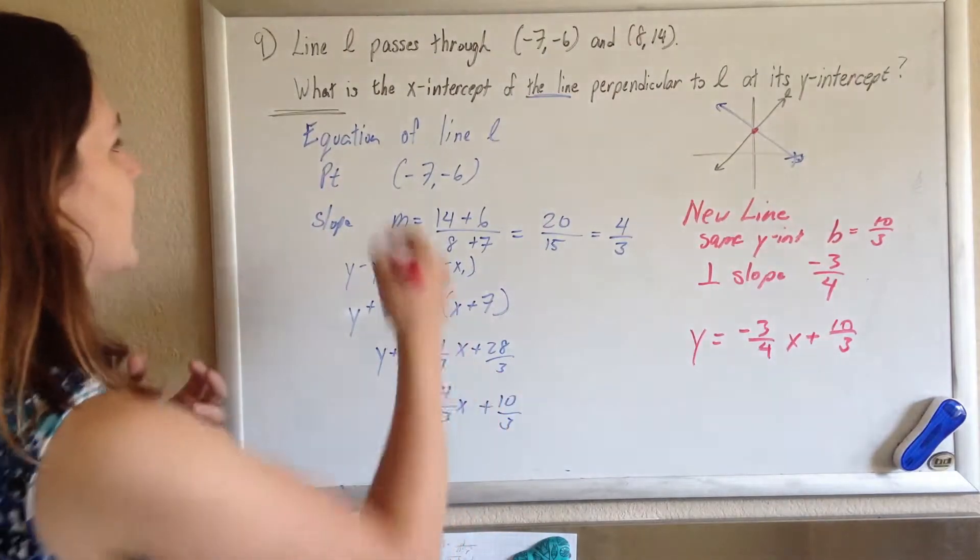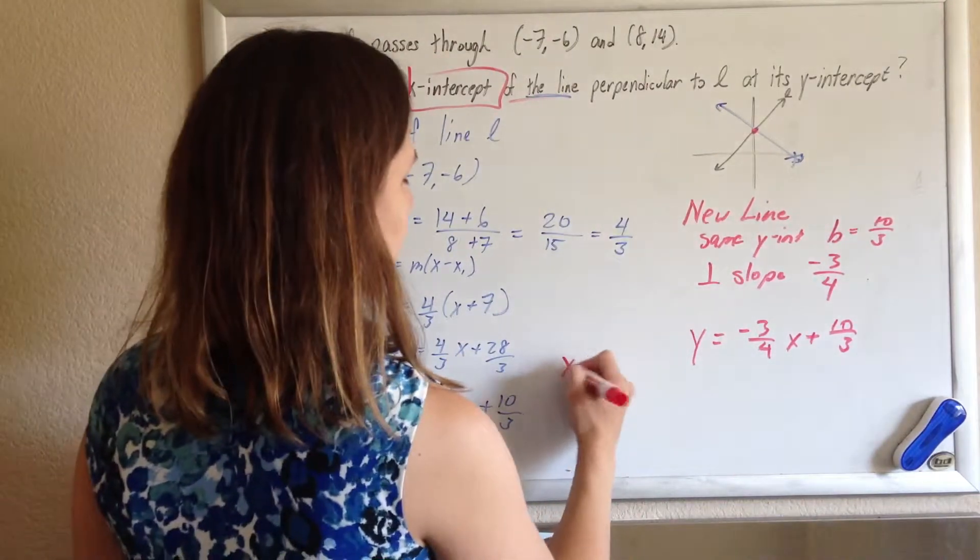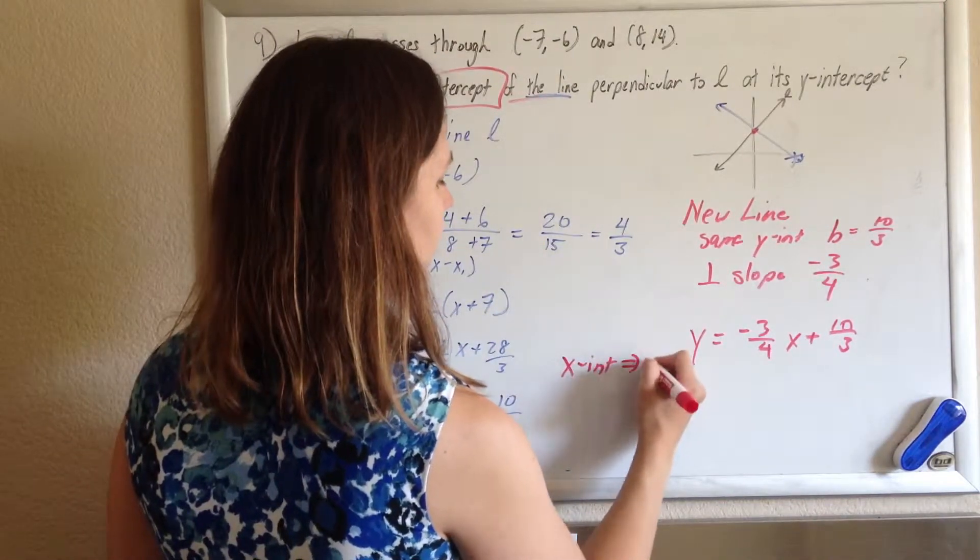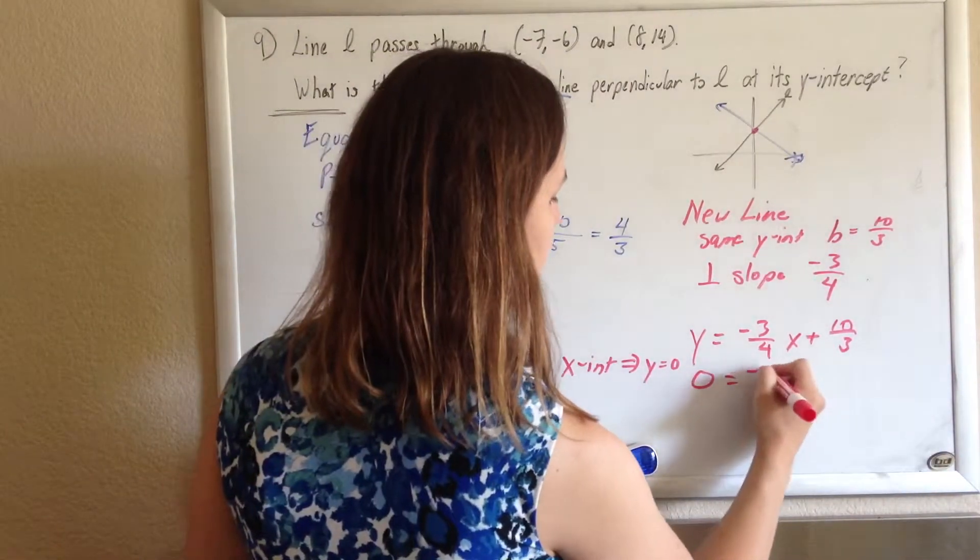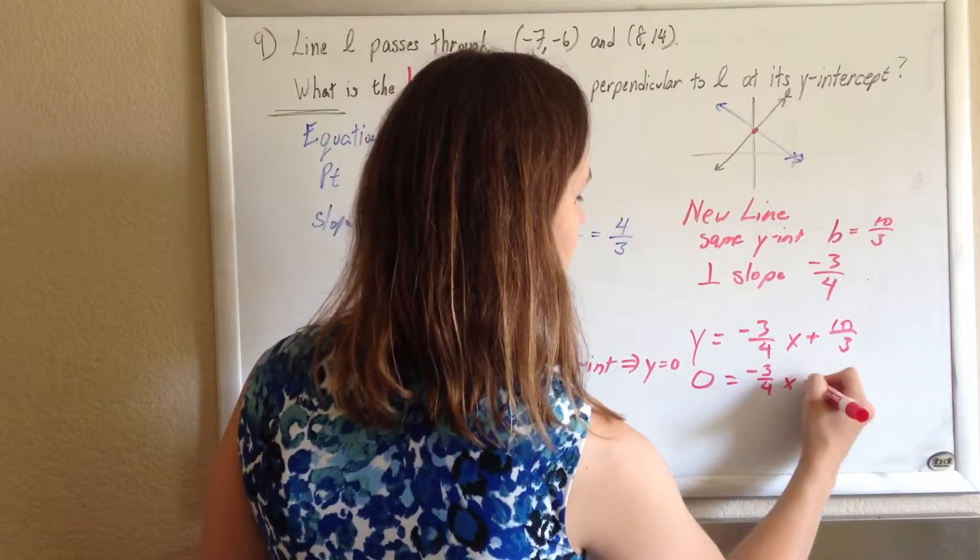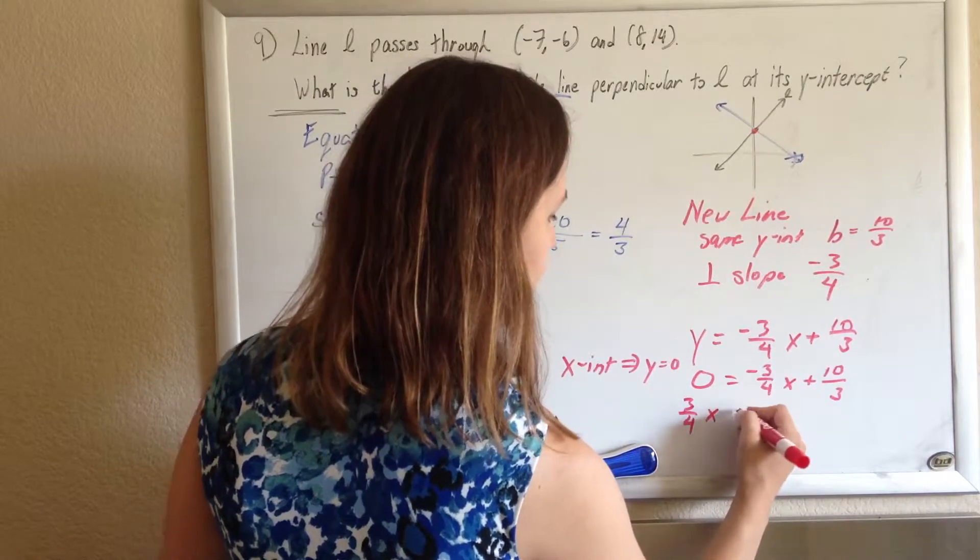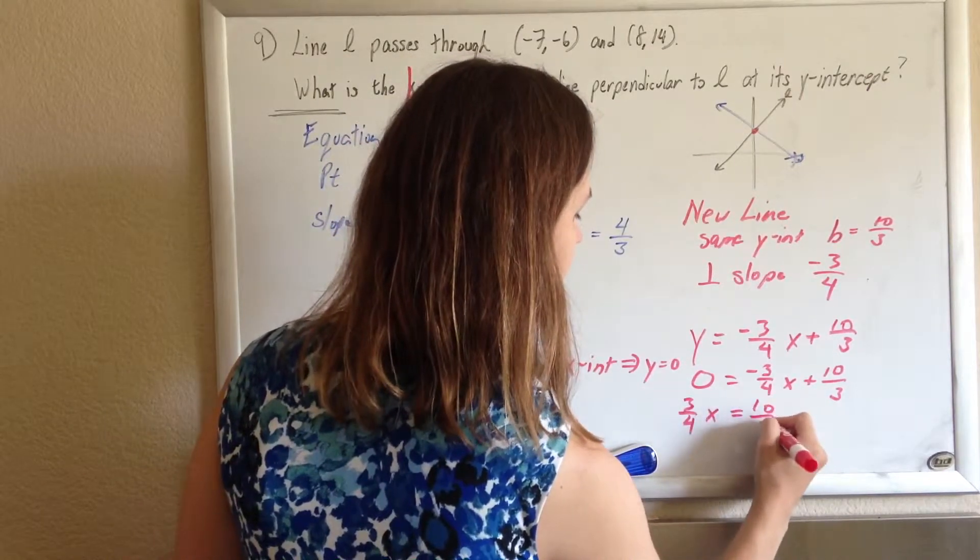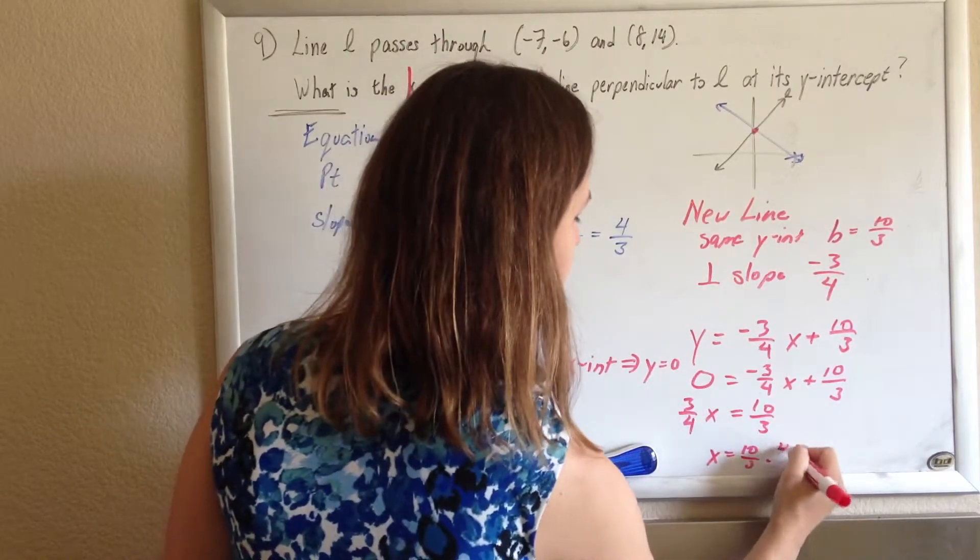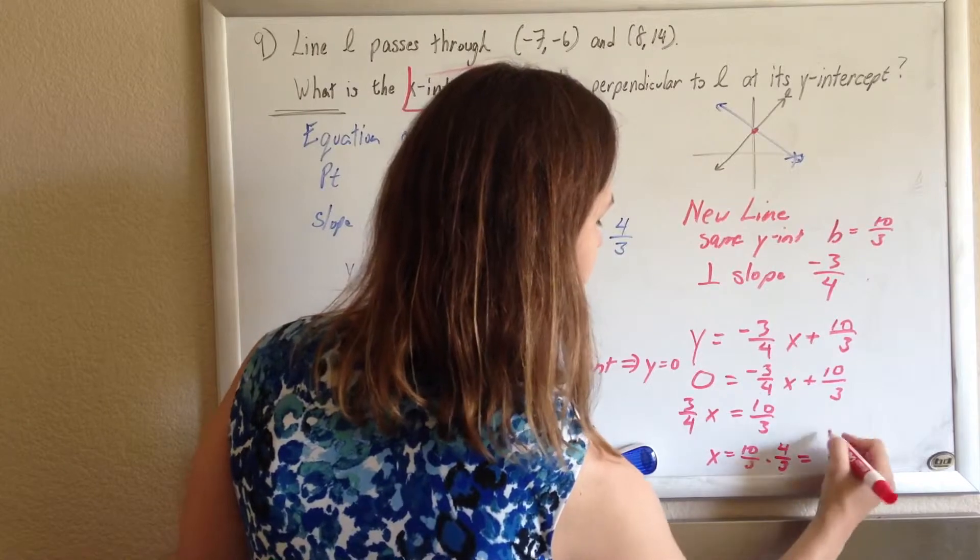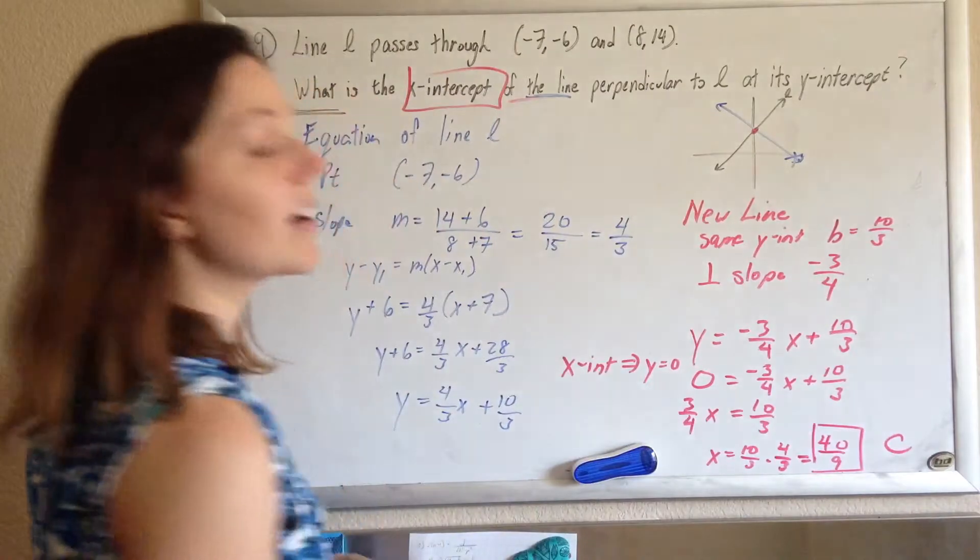We're not done yet, because they want the x-intercept of my new line. If I want an x-intercept, I know that the y must be 0. So 0 equals negative 3 fourths x plus 10 thirds. Add the 3 fourths, so 3 fourths x equals 10 thirds, multiply both sides by the reciprocal, multiply by 4 thirds, and you'll get x equals 40/9, and you look, and you're happy, because that answer is there, and it is C.